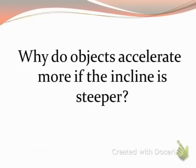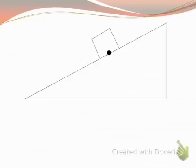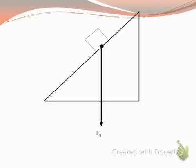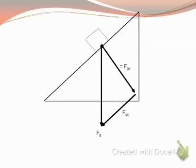We want to ask the question: why is it that objects accelerate more if the incline is steeper? Here's our object sitting on the incline — there's our weight, there's our y-component of our weight, and there's our x-component of our weight. We know the angle of the incline, and that's a similar triangle to what we create with our forces. Watch how these forces change as the incline gets steeper. Notice how our x-component is greater than before, and it's that x-component of our weight that causes things to roll down the incline.